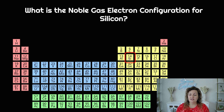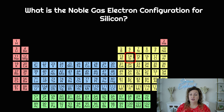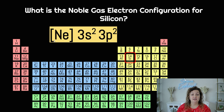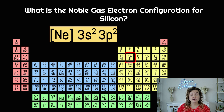Let's do another one — silicon. First locate silicon, it is right here. If you want to try this one on your own, pause this video and see if you can get it right. So if I'm looking for the noble gas to start with, I am not looking at argon — argon occurs after silicon. I need to go up one, so I will be starting with neon in this case. Put your neon in brackets — don't forget those brackets, it's very important. And then you're going to start here, in the third row: 3s2. And then we're going over, still in the third row: 3p — how many did we go over? 1, 2. So 3p2.